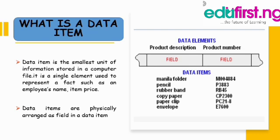For the date of birth, the data items are all numbers. So for example, the numeric data items that make up a date of birth form the date-of-birth field.